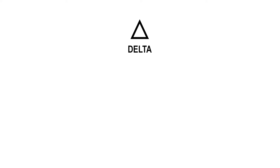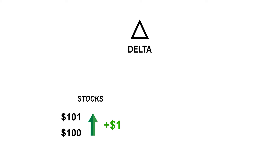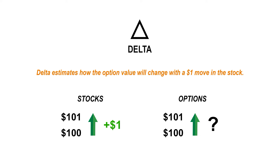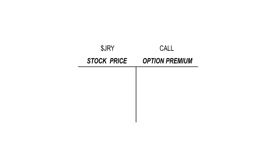So first, let's start with the delta. It's easy to know that if the stock price moves up a dollar, I make $1 for every share I own. But how do I know how much I'll make on my options? Well, that's what the delta is for. It tells me how much the value of my options will increase or decrease for every $1 move of the stock.